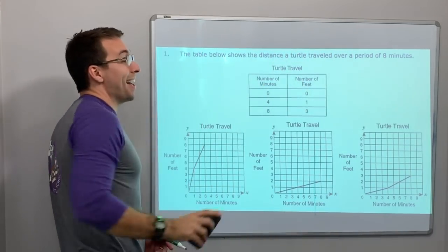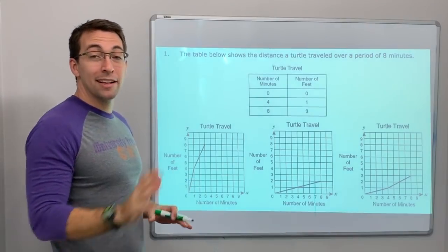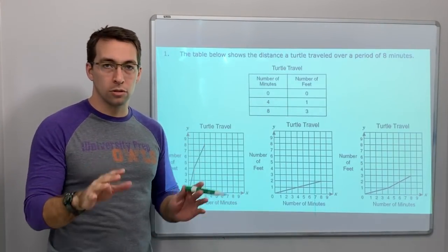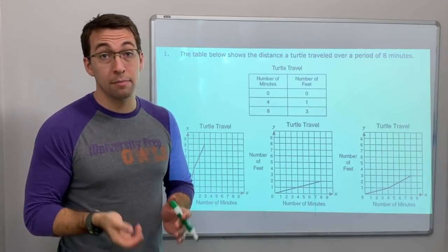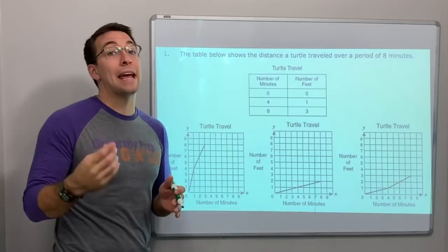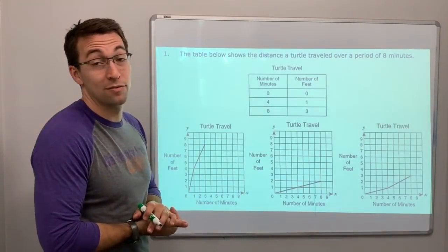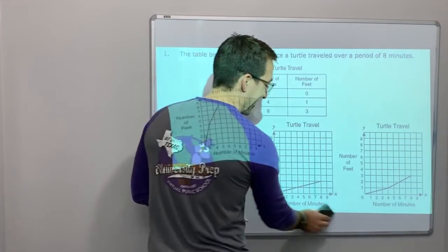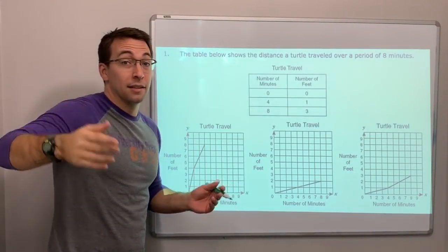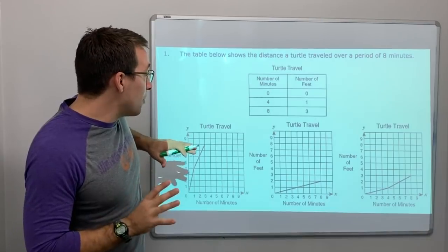Question number one. Let's look at this. You're going to have a lot of paper, a lot of graph, a lot of stuff to take in when you have these questions. Calm down, go slow. The table below shows the distance a turtle traveled over a period of eight minutes. This is very big distance.